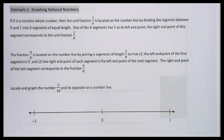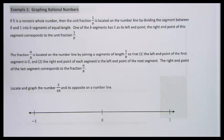In this lesson, we're going to talk about how we can graph rational numbers on a number line. Remember, a rational number is any number that can be written as a fraction. So one-third, two-fifths, twenty-five hundredths — those are all rational numbers.